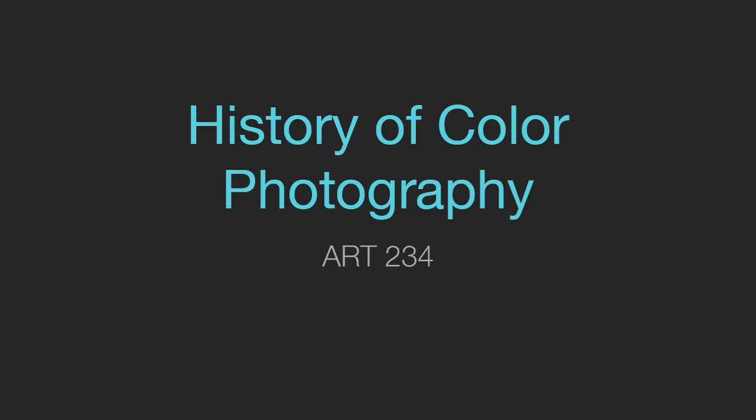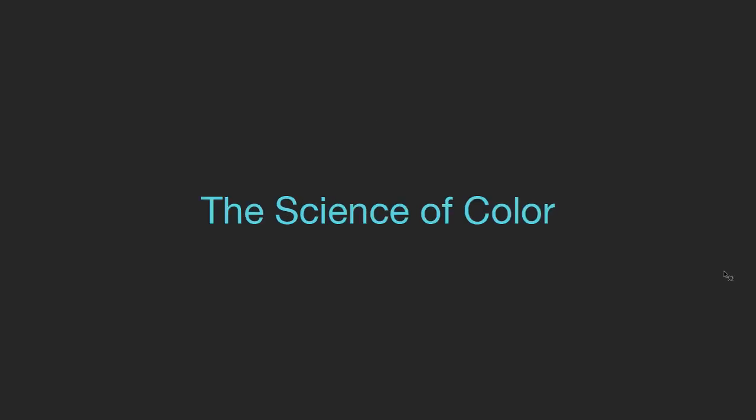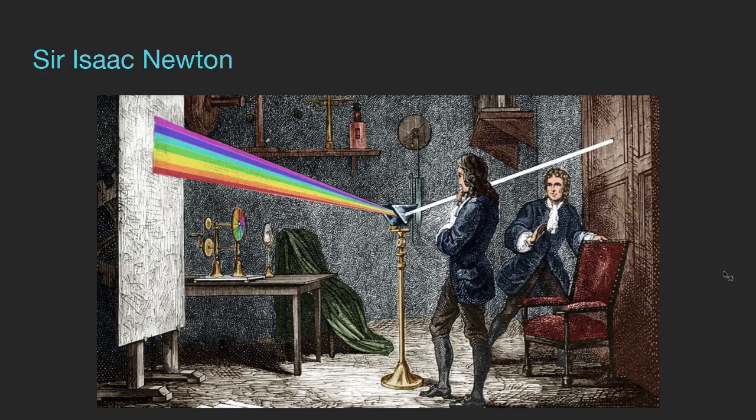We're going to start off talking a little bit about the science of color. We begin with Sir Isaac Newton, known for his contributions to physics. He was really interested in optics and how we see things — specifically understanding the rainbow, light, and how we see light.